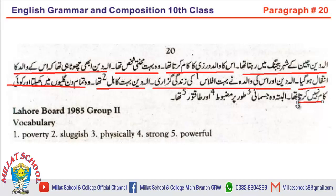وہ تمام دن گلیوں میں کھیلتا اور کوئی کام نہیں کرتا تھا — he played all the day long in the streets and did not work. Negative came here — in past indefinite negative and interrogative, we use 'did' and 'did not.' Did is the second form of 'do,' so after 'did' we apply the first form of the verb. In negative sentences: did not + first form; in interrogative: did at the beginning of the sentence. البتہ وہ جسمانی طور پر مضبوط اور طاقتور تھا — however he was physically strong and powerful.